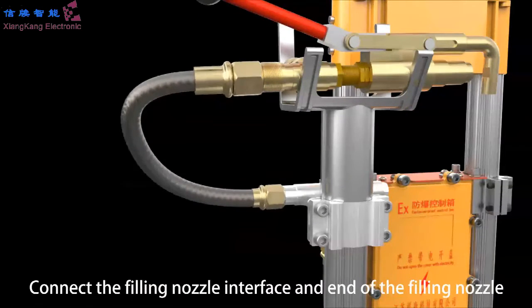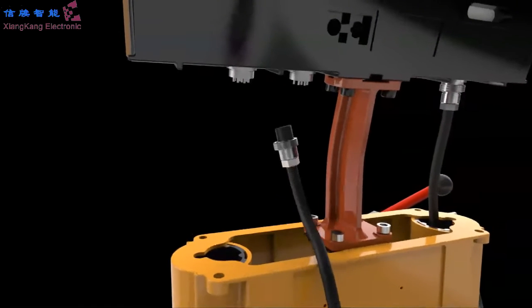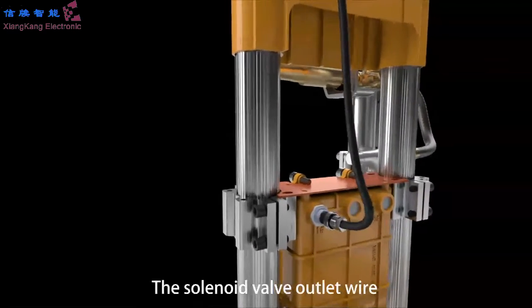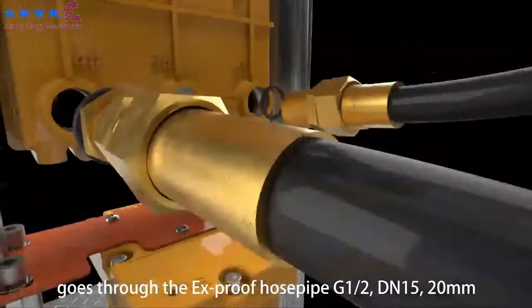Step 7: Explosion-proof power box wiring. Connect one end of the power cable to the scale display. The other end is connected to the explosion-proof power box. The solenoid valve outlet wire goes through the explosion-proof hose pipe G1/2, DN15, 20 millimeters.